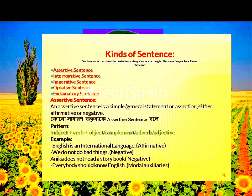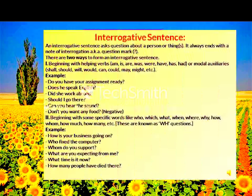An assertive sentence is a simple or general statement — an assertion that is either affirmative or negative. Its pattern includes subject, verb, object, and statement. Examples: 'English is an international language.' 'We go to school every day.'